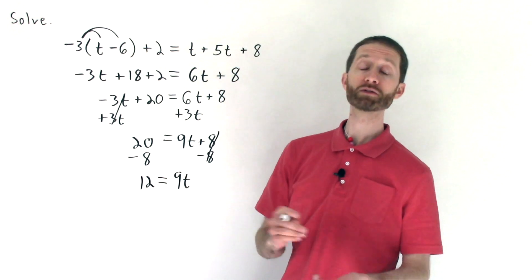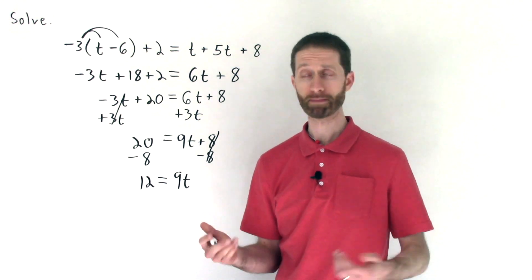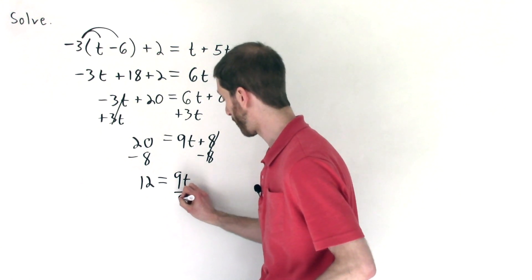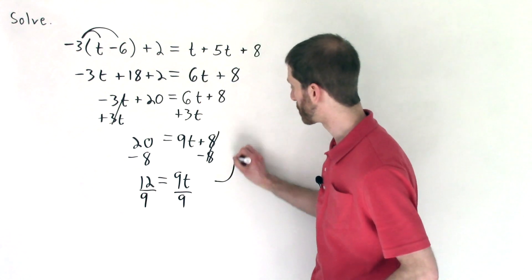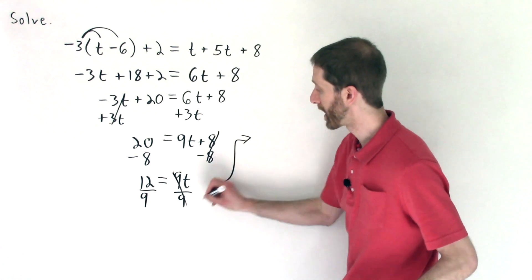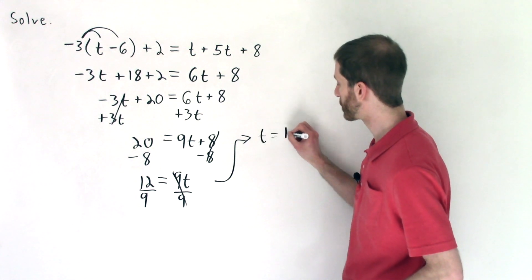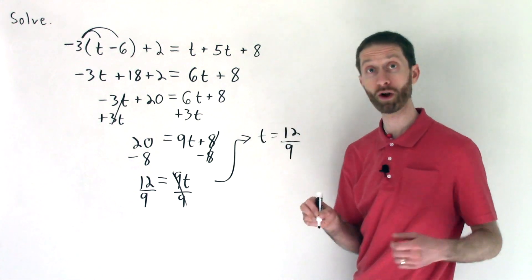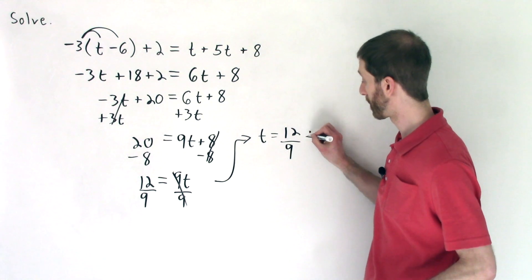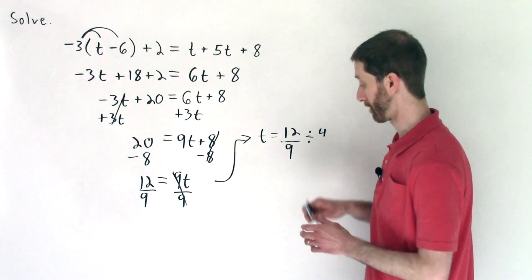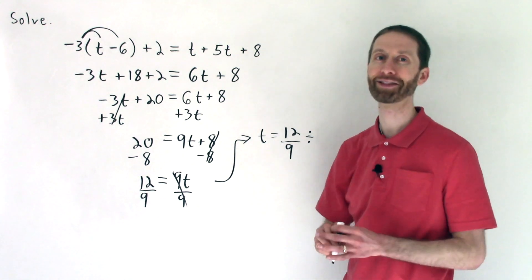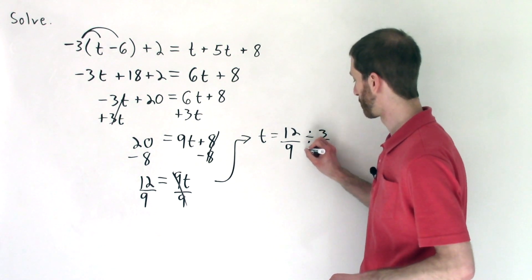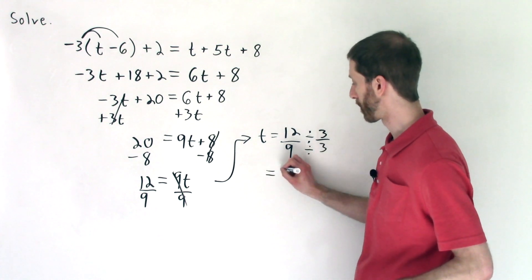And finally, we're going to undo 9 times t by dividing by 9. And that will get you to your final answer. So we end up with, here I'll put this over here. The 9's divide out. T equals 12 ninths. We could simplify by dividing the numerator and denominator by 3, right? That's the GCF over 3. And so that'll give us 4 thirds.